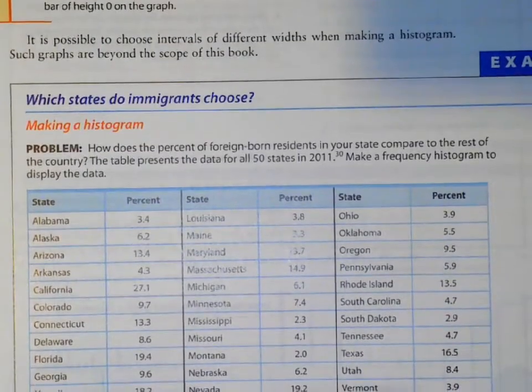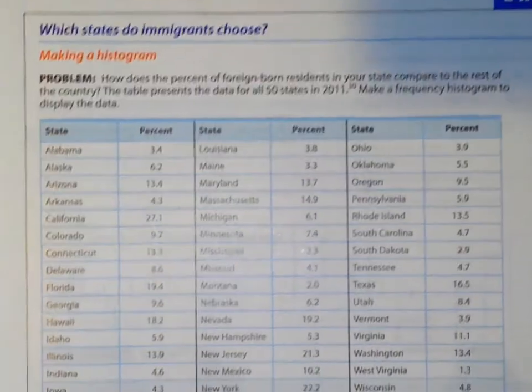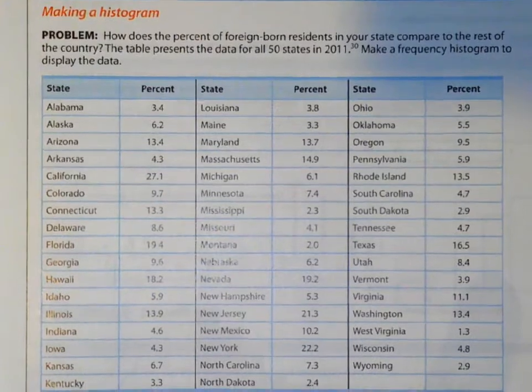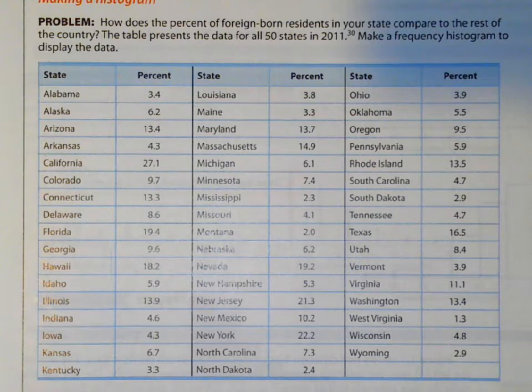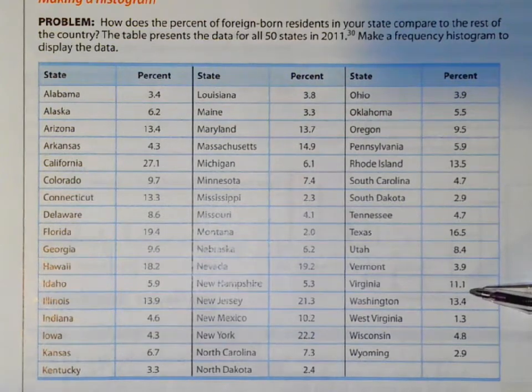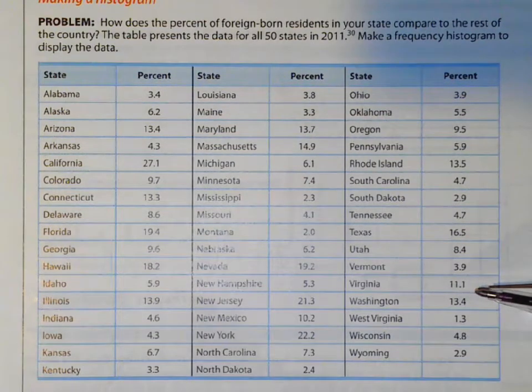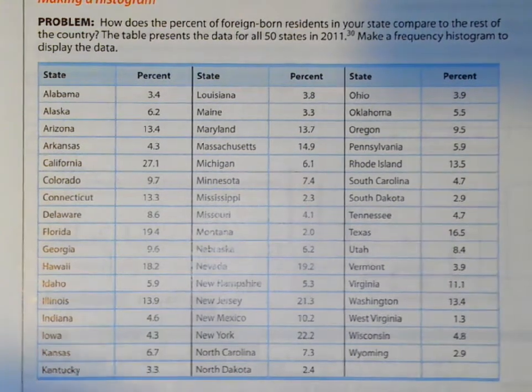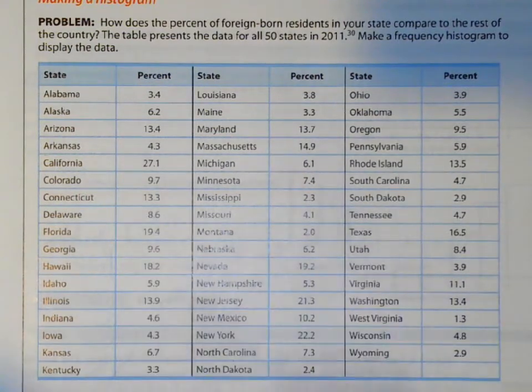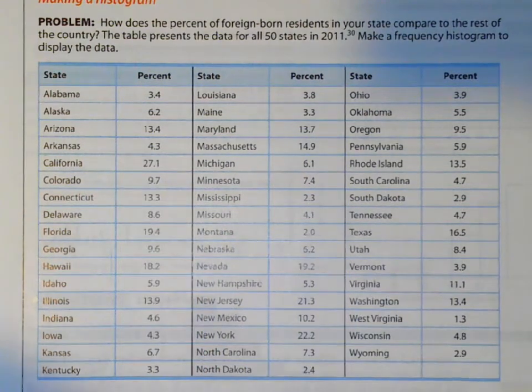So let's look at an example. How does the percent of foreign-born residents in your state compare to the rest of the country? The table presents the data for all 50 states in 2011. I'm going to make a frequency histogram to display the data. Here's Virginia, we have 11.1% of our residents are foreign-born. Here's how other states compare. You can see California is pretty high, some other states are pretty low, West Virginia is pretty low.